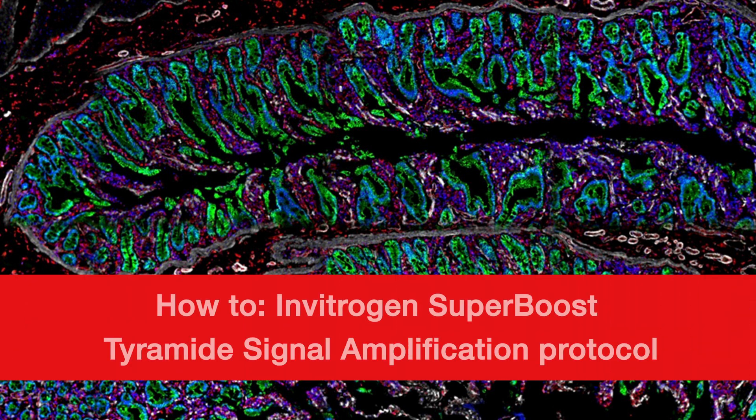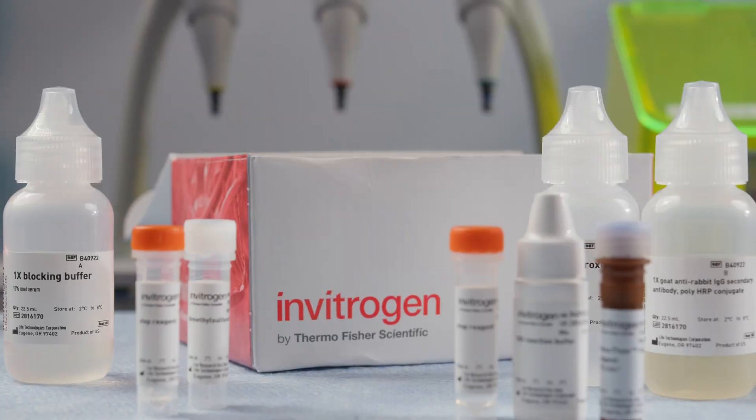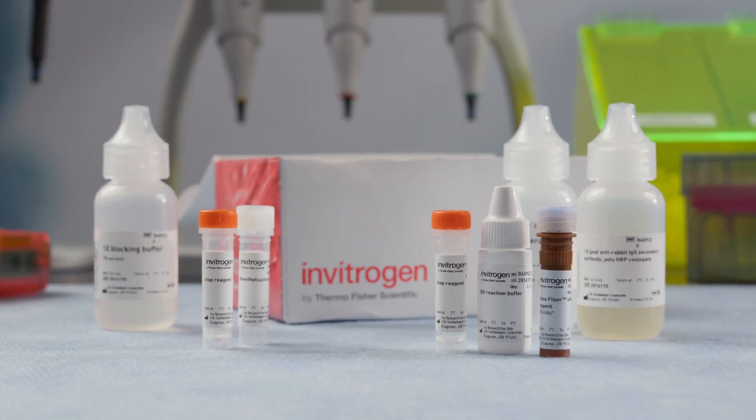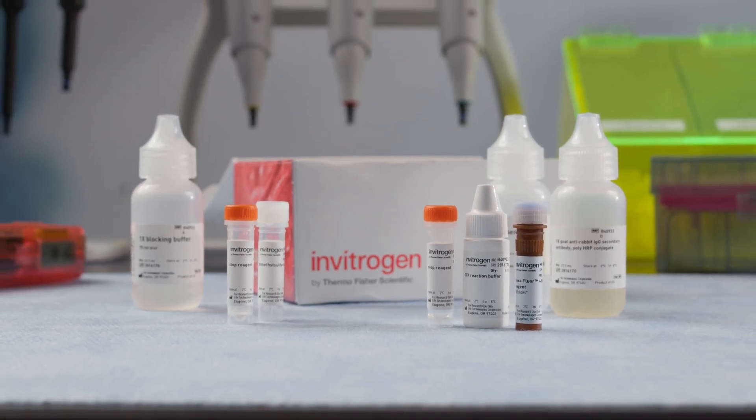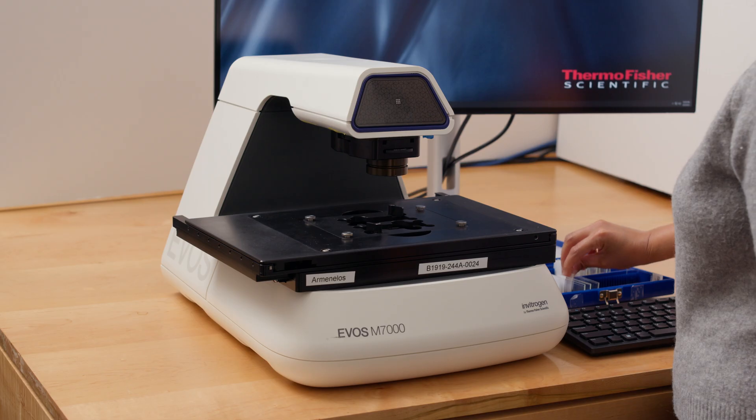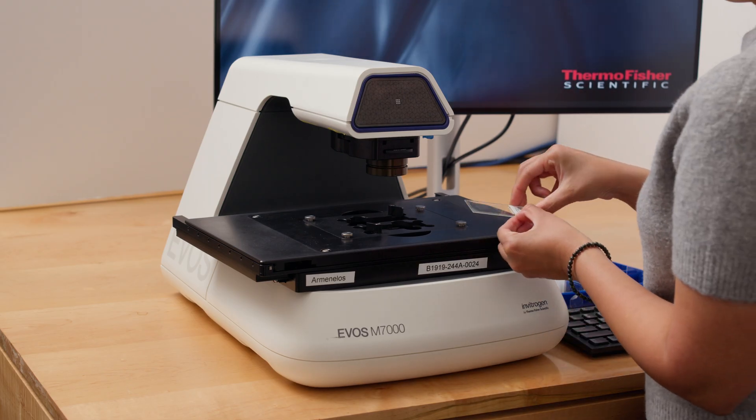Detecting low abundant proteins is difficult with conventional microscopy staining methods. The Invitrogen Tyramide SuperBoost amplification technology boosts fluorophore signals and saves using too much precious primary antibodies.